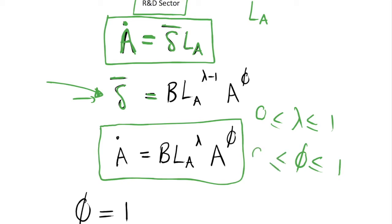The reason individual scientists cannot have an impact on δ-bar is similar to the learning-by-doing models, where we had constant returns to scale at the individual firm level but increasing returns at the aggregate level. This allows us to have a balanced growth path in the aggregate while maintaining a reasonable individual-level optimization problem. If individual firms had increasing returns to scale they might keep scaling up production, giving us explosive growth and no balanced growth path equilibrium, so we need these different individual and aggregate level assumptions for technological accumulation.